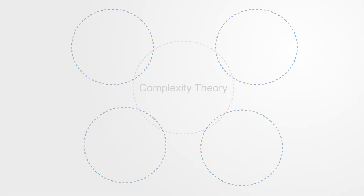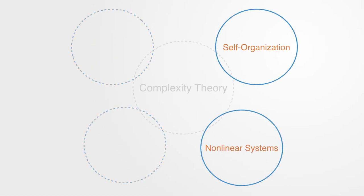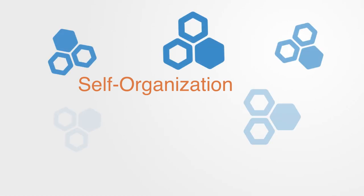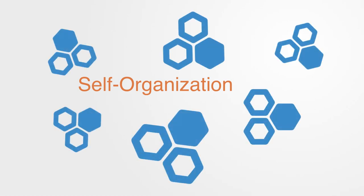These four areas include self-organization theory, non-linear systems, network theory, and adaptive systems theory. Firstly, self-organization and emergence.